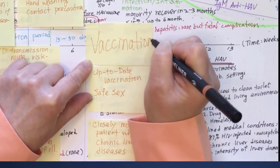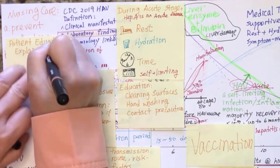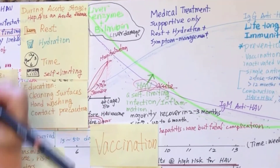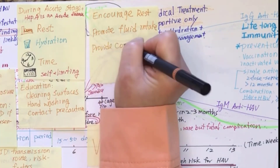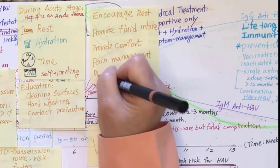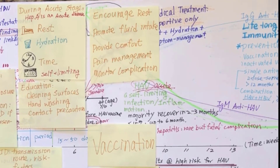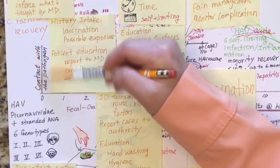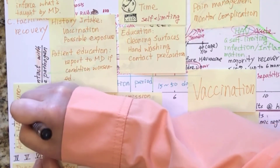Encourage vaccination for those at high risk. Patient education on laboratory testing should be reinforced. Encourage rest and promote fluid intake as tolerated. Provide comfort measures and pain management. Monitor complications such as joint pain, rash, and change of mental status. Rash may indicate bleeding — remember that the liver produces coagulation factors. Change of mental status could indicate neurological complications. Short-term protection can be achieved with immunoglobulin of hepatitis A for pre- and post-exposure.